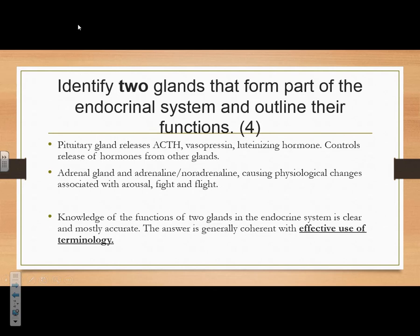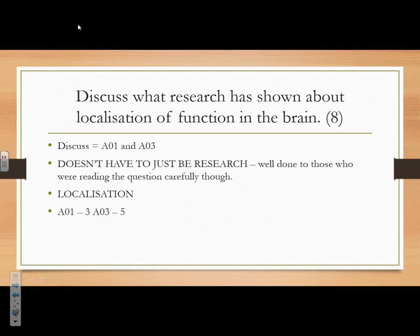Two glands and their functions: the pituitary and the adrenal gland are the two key ones. Again, effective use of terminology — the mark scheme states knowledge of the two glands in the endocrine system must be clear and mostly accurate, with the answer generally coherent with effective use of terminology.